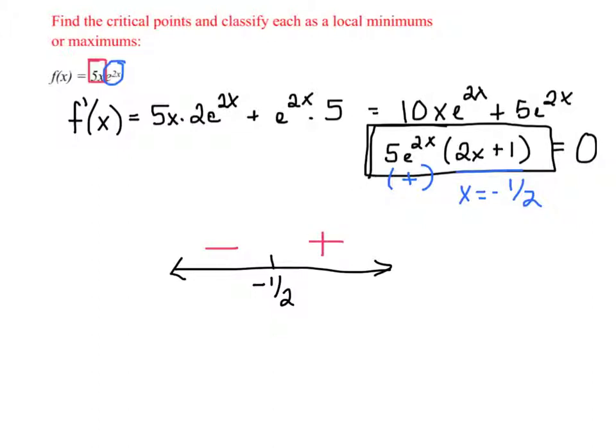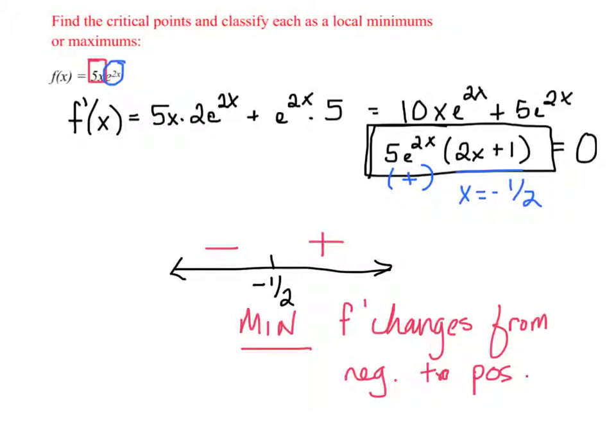So the derivative changes from negative to positive. Meaning the original function changed from decreasing to increasing. Making this a minimum. Remember, the justification: f prime changes from negative to positive. So now we've classified it using the first derivative test.